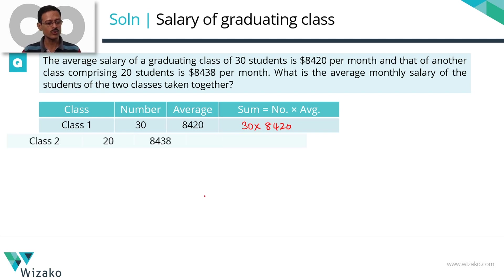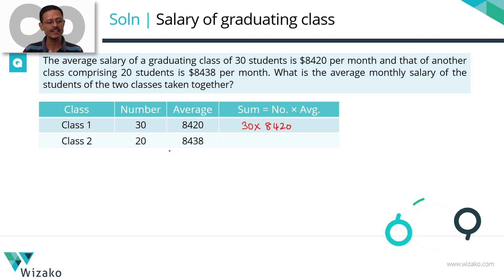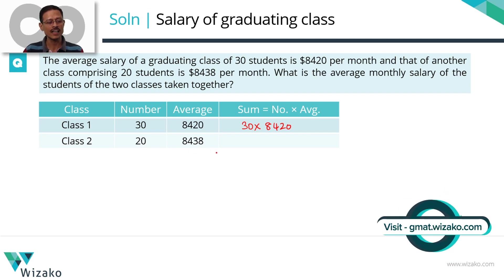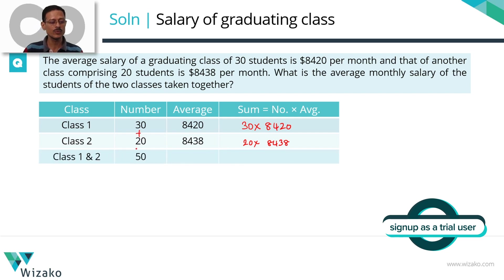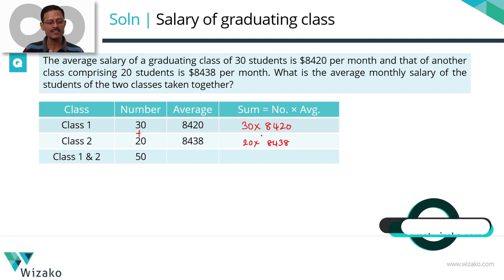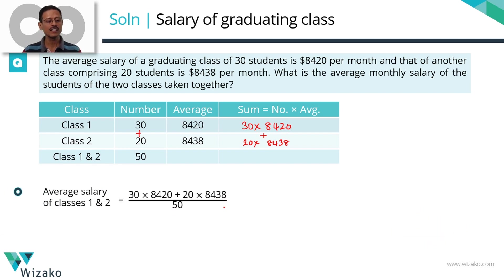Class 2: number of students is 20, average salary is $8438, so the sum of salaries of class 2 is equal to 20 × 8438. The weighted average of the two classes taken together — total number of students is 30 + 20 = 50. We add the two salary sums and divide by 50 to get the average.